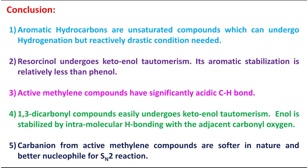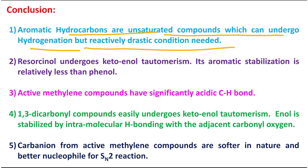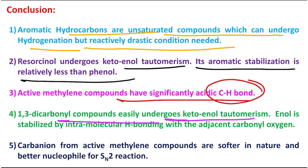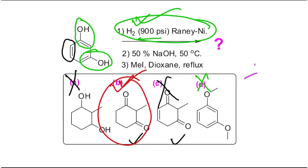What you have learned today: aromatic hydrocarbons are unsaturated and can undergo hydrogenation but require relatively drastic conditions, because aromaticity provides stabilization energy that would be lost upon hydrogenation. Resorcinol undergoes keto-enol tautomerism and its aromatic stabilization is less than phenol, so a significant percentage of the keto tautomer exists. This keto tautomer gives an active methylene compound whose C-H bonds are significantly acidic. Active methylene compounds undergo keto-enol tautomerism easily because the enol is stabilized by intramolecular hydrogen bonding with the adjacent carbonyl oxygen.